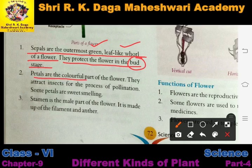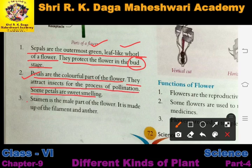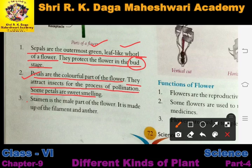Petals are the colorful part of the flower. Petals attract insects for the process of pollination. Some petals are sweet-smelling. In higher classes you will study about pollination, self-pollination, and cross-pollination. For now, you have to understand that petals are the colorful parts of the flower and they attract insects for the process of pollination.